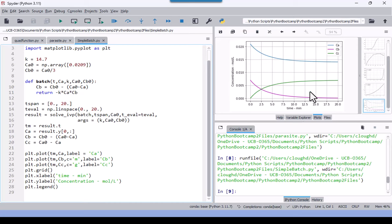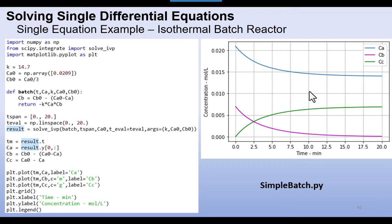This example shows how to set up and solve a single differential equation for a batch reactor. We also carry along additional variables — CB and CC — computed algebraically from the CA solution using stoichiometric relationships.